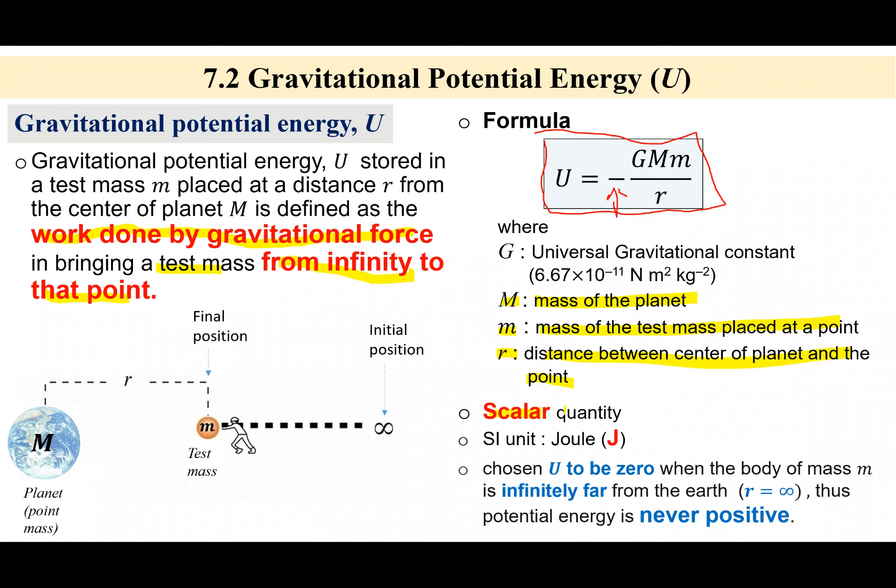And also you have to know, gravitational potential energy adalah scalar. So kita tak perlu resolve. The SI unit dia adalah joule sebab dia energy. Chosen U to be zero when the body of mass M is infinitely far from the earth. So maksudnya, kalaulah object tu terlalu-lalu-lalu jauh daripada planet, so dia punya potential energy kita assume sebagai zero.